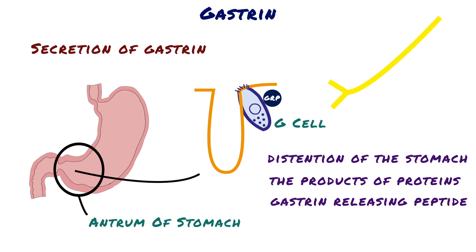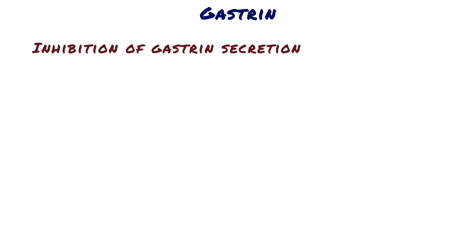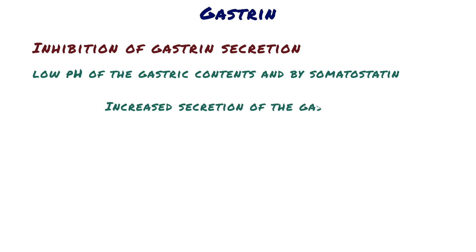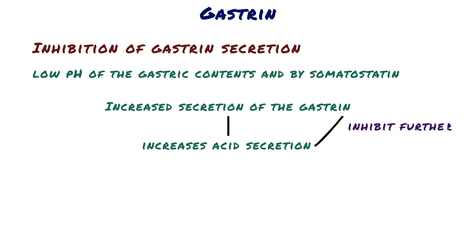In addition to these positive stimuli, gastrin secretion is inhibited by a low pH of the gastric contents and by somatostatin. Acid in the antrum inhibits gastrin secretion, partly by a direct action on G-cells and partly by release of somatostatin, a relatively potent inhibitor of gastrin secretion. The effect of acid is the basis of a negative feedback loop: increased gastrin secretion increases acid secretion, but the acid then feeds back to inhibit further gastrin secretion.